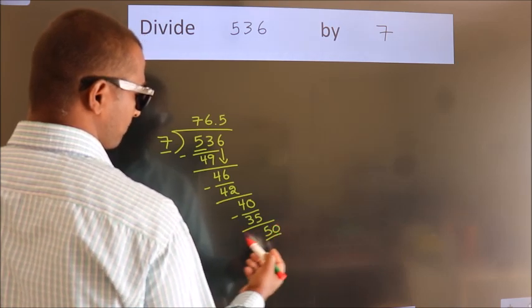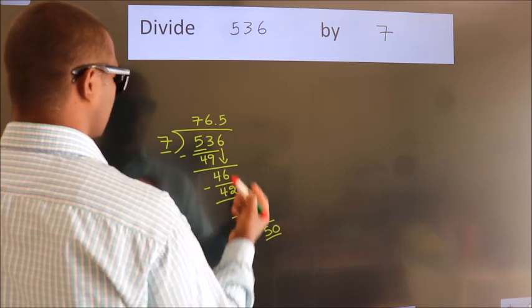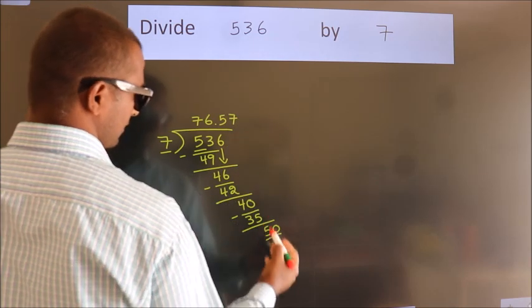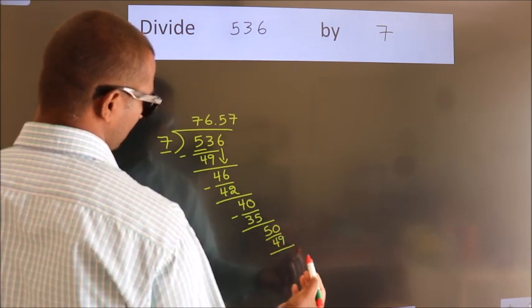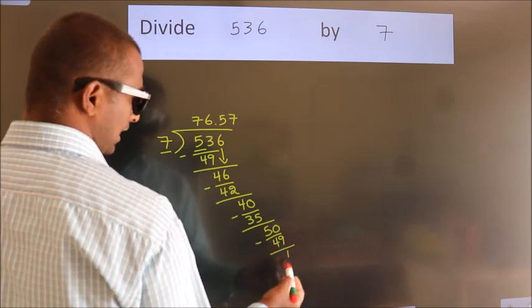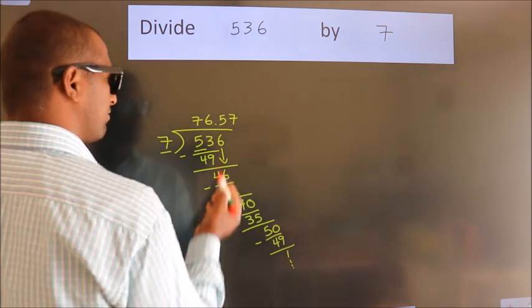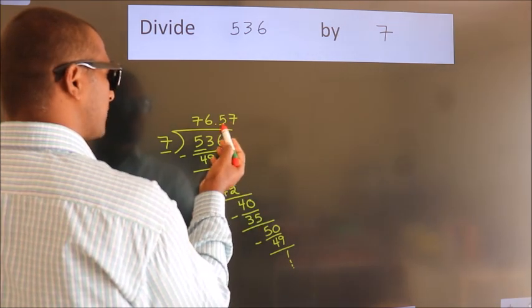So 50. A number close to 50 in the 7 table is 7 times 7 equals 49. Now we subtract. We get 1. The division continues. It is enough if we do up to 2 decimal places.